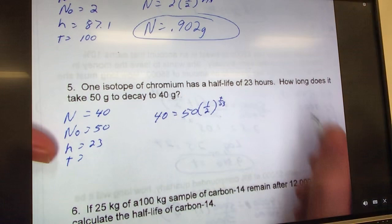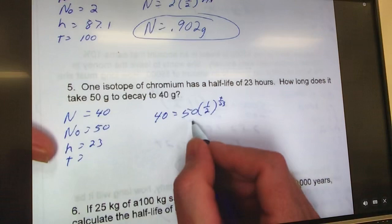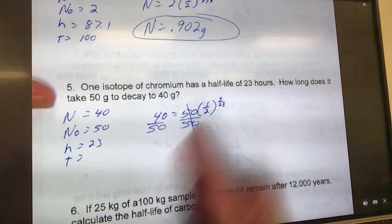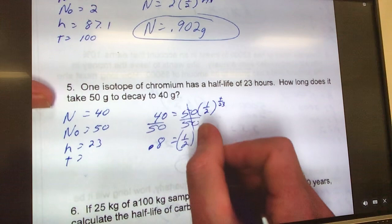All right, so now, first thing, just like we did on the front, I want to get rid of this multiplication, so I divide by 50. That cancels off. I've got 40 divided by 50, so that's 0.8, and then one-half raised to the T over 23.